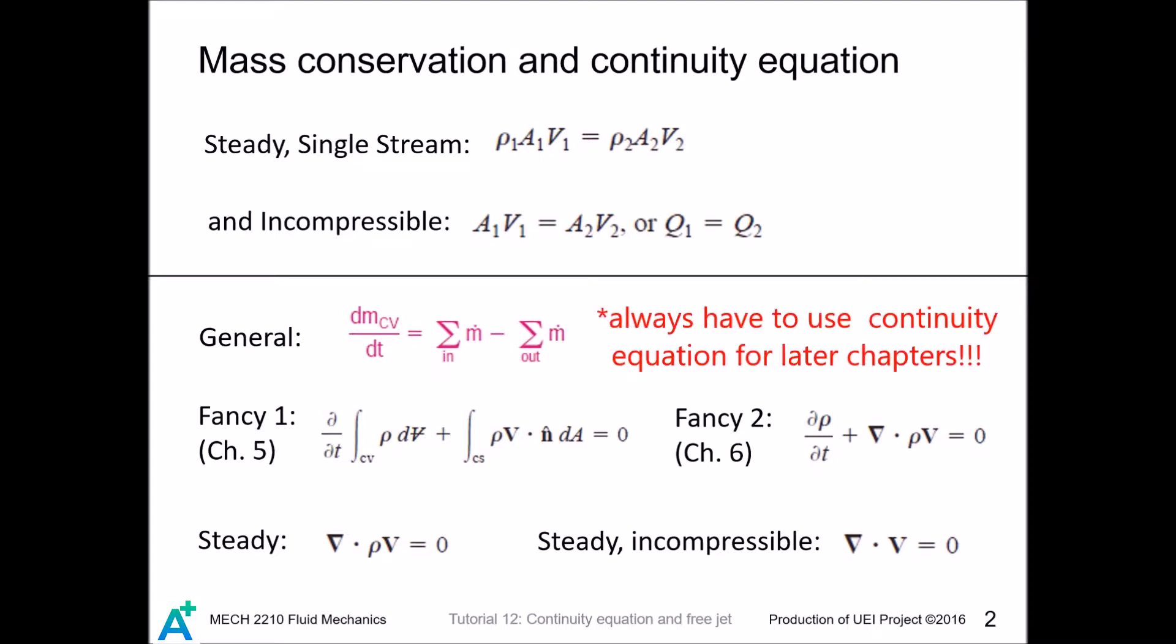You're familiar with mass conservation after taking thermodynamics. For a tank with one inlet and one outlet to have the mass inside remain constant, we must have mass flow rate at the inlet equals mass flow rate at the outlet. We also have mass flow rate equals ρAV, so we have this familiar equation.